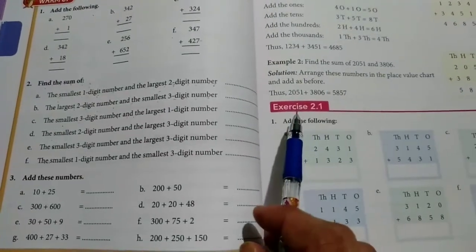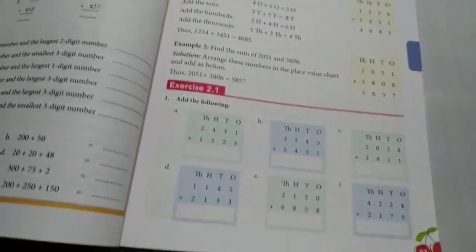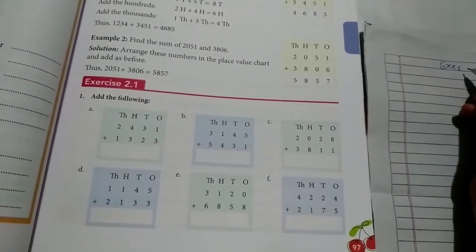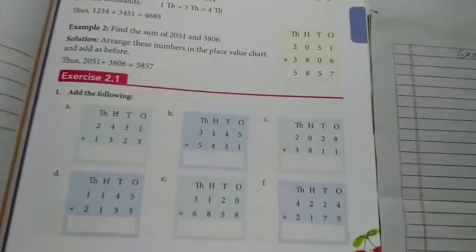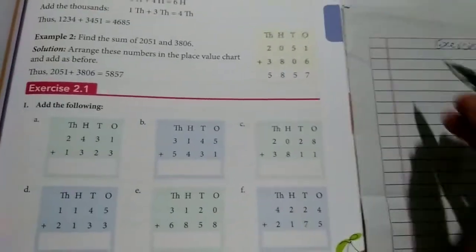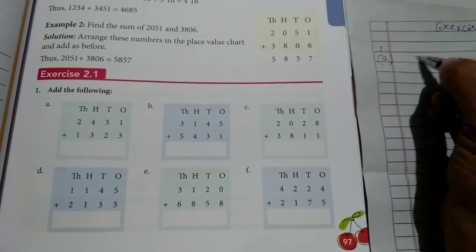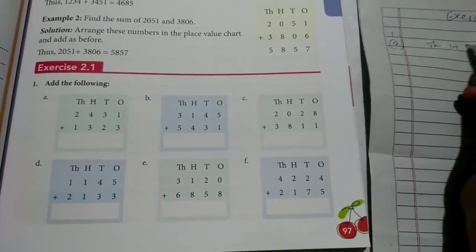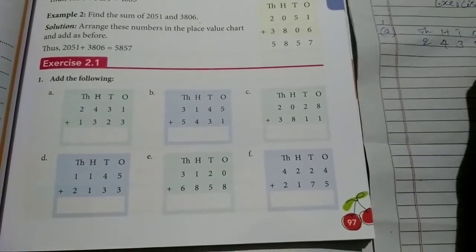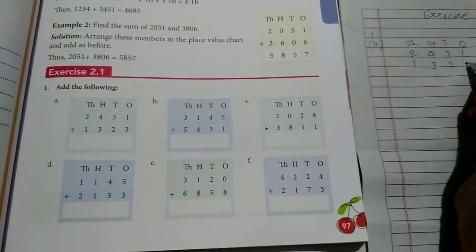Today we have to start exercise 2.1. What is first one here? First main, first one. Thousands, here hundreds, tens, ones. What is the number? 2, 4, 3, 1. And 1, 3, 2, 3.